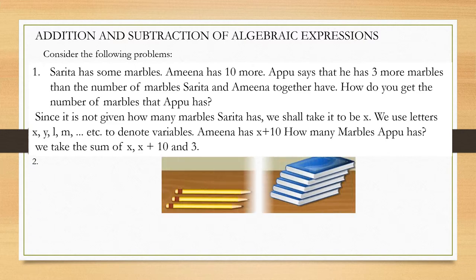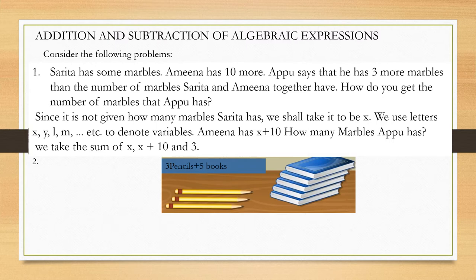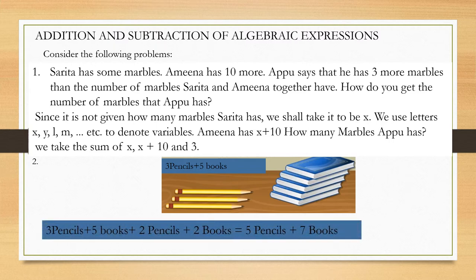Another example: we have 3 pencils and 5 books. How many objects are there on the table? We cannot combine pencils and books together, so we write it as 3 pencils plus 5 books. If we add 2 more pencils and 2 more books, we can add 2 pencils to 3 pencils, giving 5 pencils, and 5 books plus 2 books becomes 7 books.